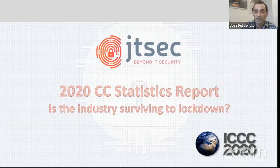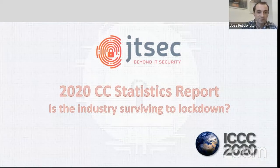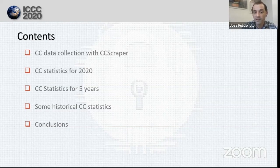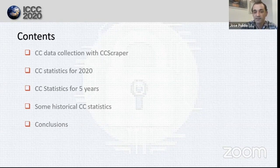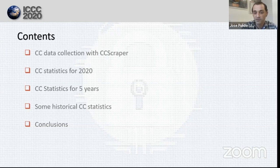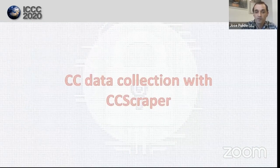Today I'm going to talk about the Common Criteria Certification Statistics of the last year. I hope you enjoy this presentation, so let's begin. First, we will start with a brief presentation of the CC Scrapper tool that we use to collect data about CC certifications. Then we will see and analyze statistics from the current year, from five years, and some historical data. Finally, I will share our conclusions with you, and we might be able to answer the key question: is the certification industry surviving the lockdown?